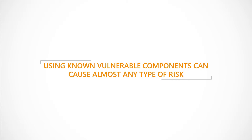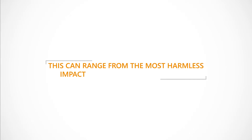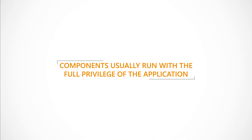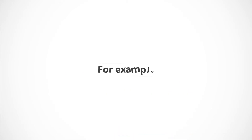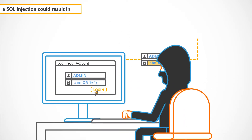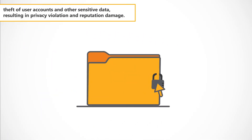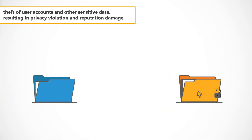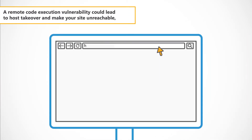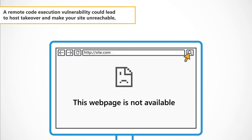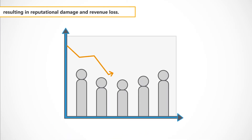Using known vulnerable components can cause almost any type of risk, ranging from the most harmless impact to complete host takeover. Components usually run with the full privilege of the application. For example, a SQL injection could result in theft of user accounts and other sensitive data, resulting in privacy violation and reputation damage. Or, a remote code execution vulnerability could lead to host takeover and make your site unreachable, resulting in reputational damage and revenue loss.